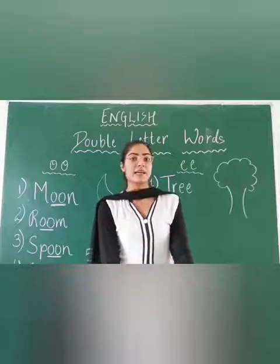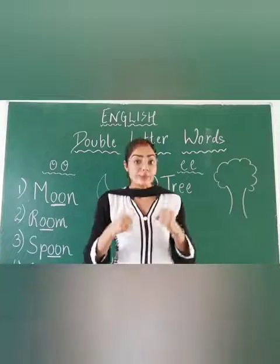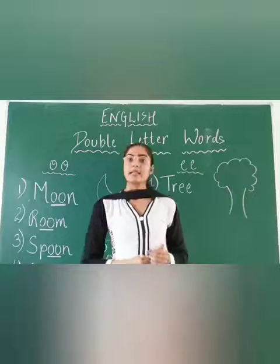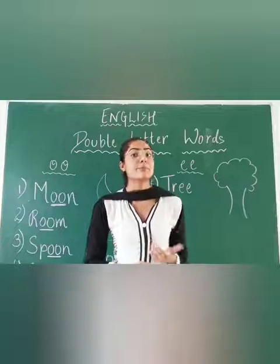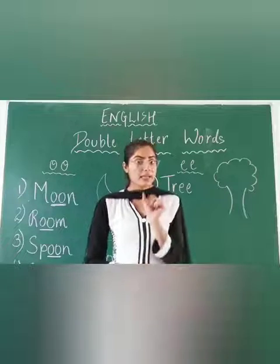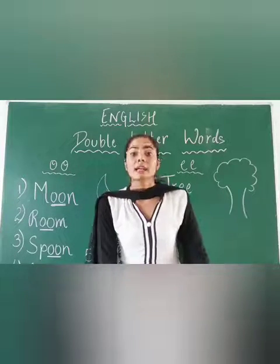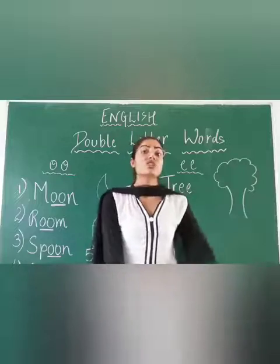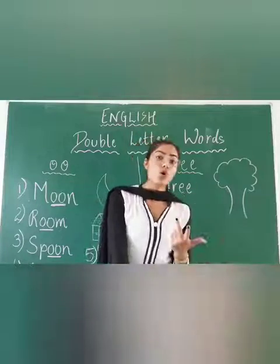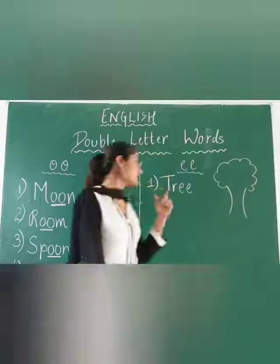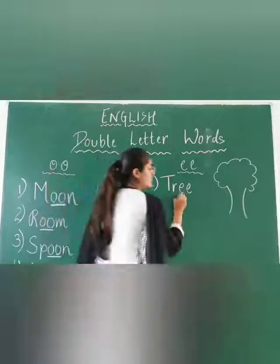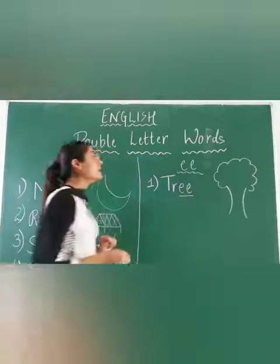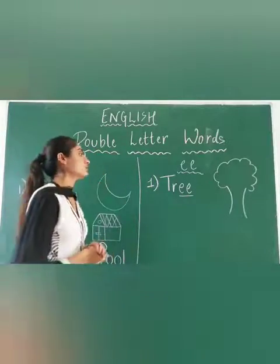When there is one letter, like in 'bed', one E is used, so it will be the short 'e' sound — less energy is used. When there are two letters, double E, more energy will be used and the sound is the long 'ee'.